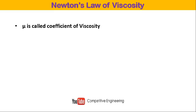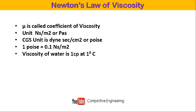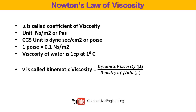The coefficient of viscosity mu has units of Newton-second per meter squared, or Pascal-second in SI units. In CGS units the unit is dyne-second per centimeter squared, also called Poise. The conversion is: one Poise equals 0.1 Newton-second per meter squared. The viscosity of water is one centipoise at one degree Celsius, which equals 1×10⁻² Poise, or 10⁻³ Newton-second per meter squared.